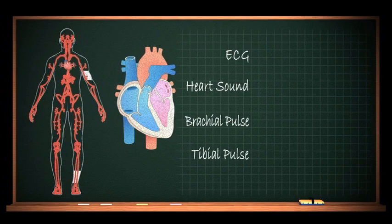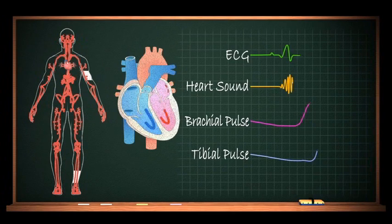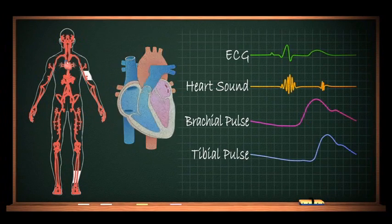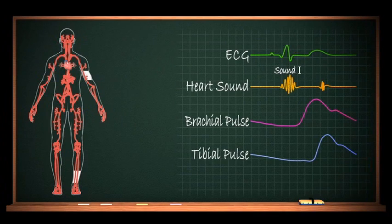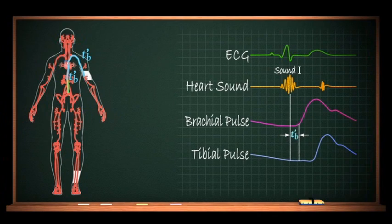The parameters we need to measure in order to find HAPWV are ECG, heart sound, brachial pulse, and tibial pulse. When the aortic valve opens in response to the contraction of the heart, a pulse wave is generated in tandem with the first heart sound. This pulse wave propagates through the blood vessels in a cylindrical fashion. The section up to the rise of the brachial pulse wave is the time taken by the pulse wave to reach the arm from the heart. This time is recorded as the variable T-B.